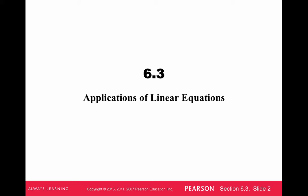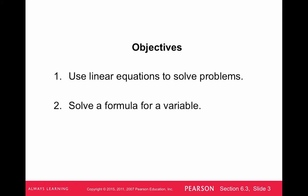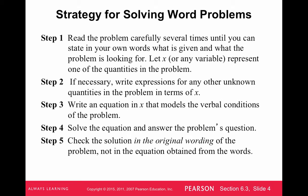In the last two sections we learned how to evaluate and simplify expressions. Now we're going to actually solve these equations with word problems. The strategy for solving word problems is generally to read the problem carefully several times until you understand what you're doing. The main thing is you let x, or any variable you want to choose, represent one of the quantities in the problem — generally that would be the answer. If necessary, write expressions for any other unknown quantities in terms of x, then write an equation in terms of x, solve the equation, and check the solution.